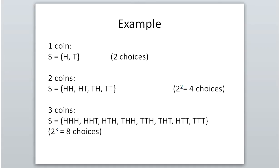The sample space is written as S equals squiggly brackets listing the possibilities — for one coin: {H, T}. You must use squiggly brackets for it to be mathematically correct. If we flip two coins, we could have HH, HT, TH, or TT, giving us four choices in the sample space.